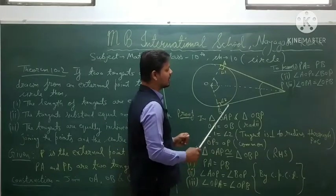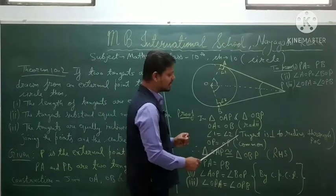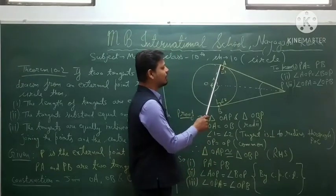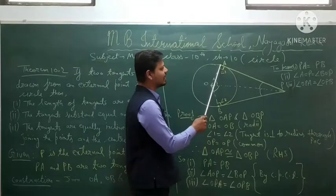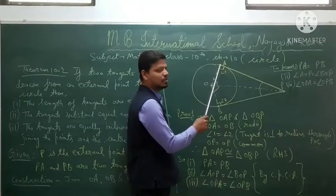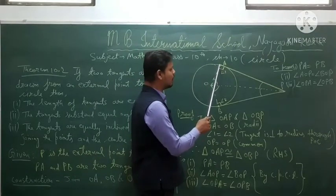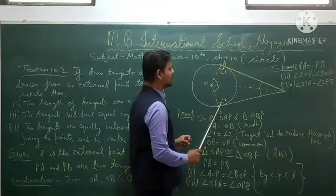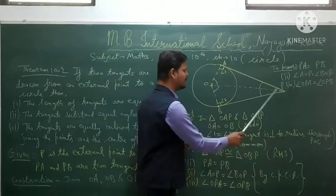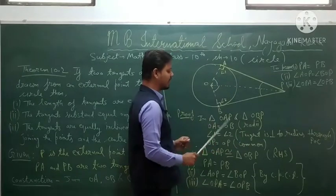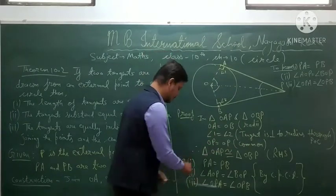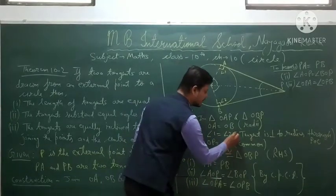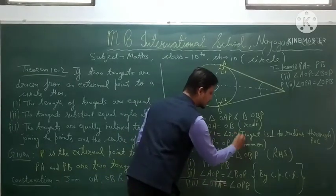In triangle OAP and triangle OBP: OA equals OB because both are radii of the circle. Angle 1 equals angle 2, that is, both equal 90 degrees, because by Theorem 10.1 the tangent is perpendicular to the radius through the point of contact. So OA is perpendicular to AP and OB is perpendicular to BP.